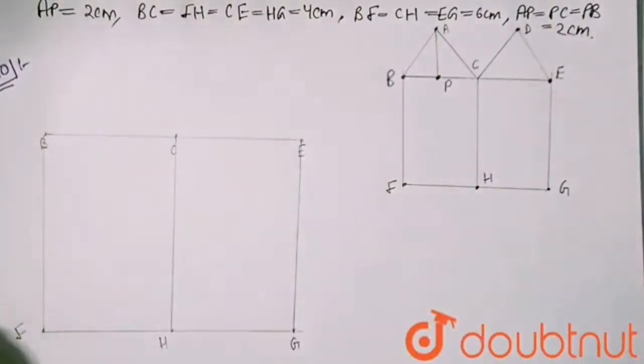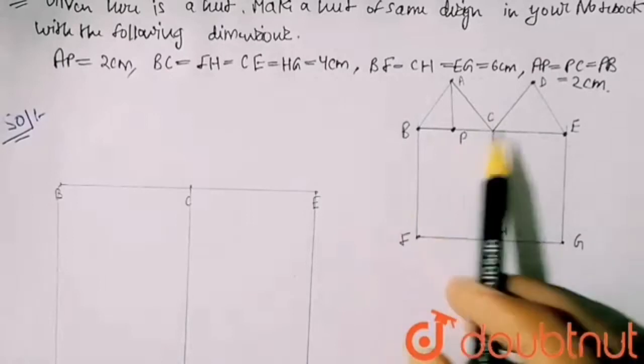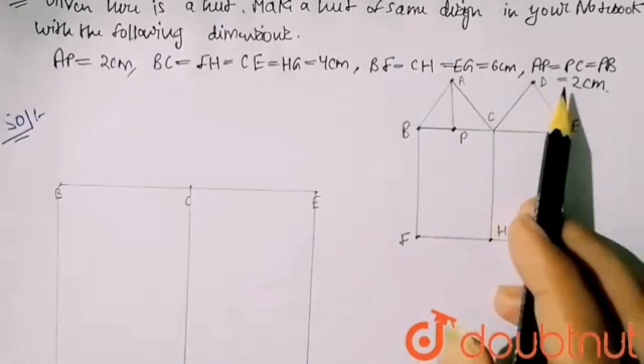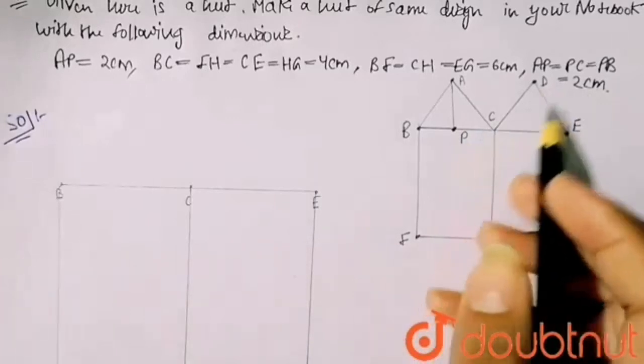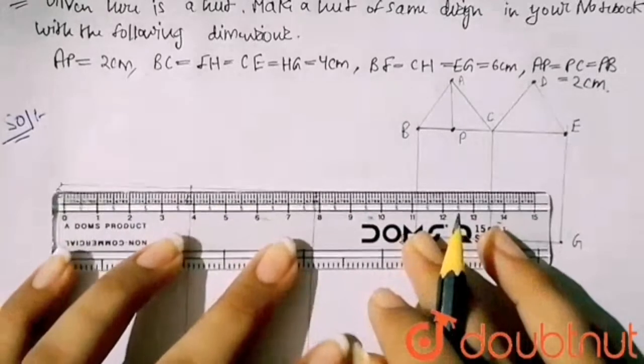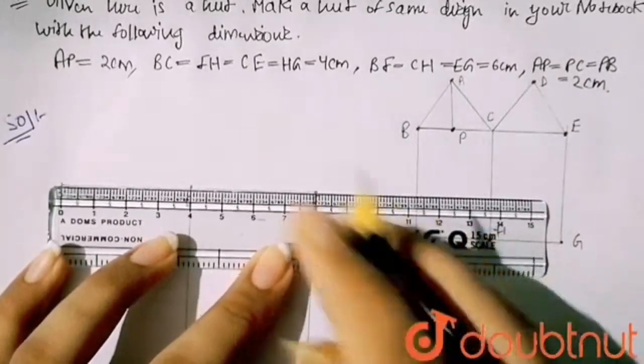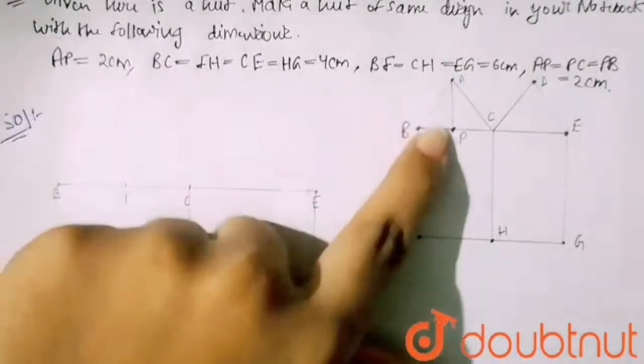Now we have to draw this triangle shape. Here AP, PC, PB are 2 cm each. So my AP and PC will be here 2 cm. This is my 4 cm line - you can mark here this will be my P point. Now on P point we will draw AP, and AP is 2 cm, same like this.